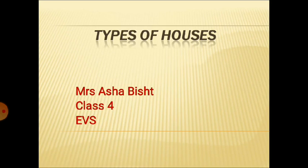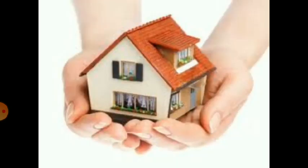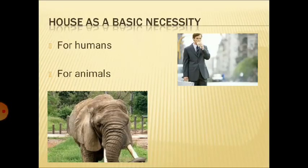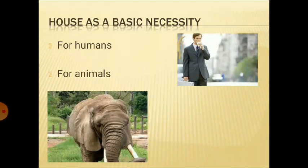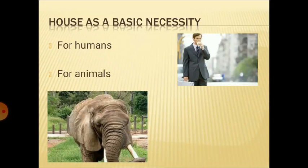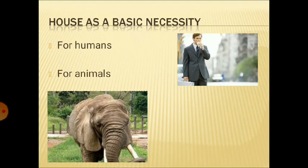The first chapter is Types of Houses. As we all know, not only human beings but animals also need a house to live and survive, because house is a basic necessity. For humans as well as for animals, we require a house to keep ourselves safe from heat, cold and rain. A house keeps us comfortable, saves us from thieves and robbers, and always keeps us safe.